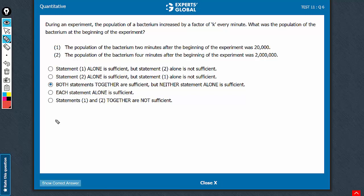Let's assume that at the beginning of the experiment, at 0 minutes, the population is a. Statement 1 says that after 2 minutes, it becomes 20,000. So here it is a into k square, which is 20,000. Two variables, one equation cannot be solved.